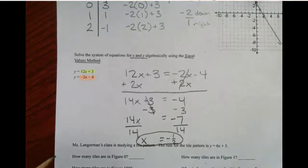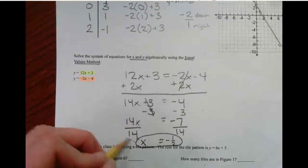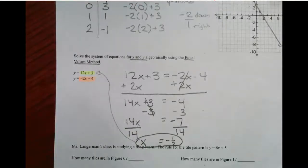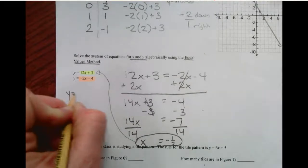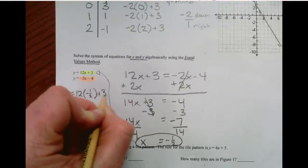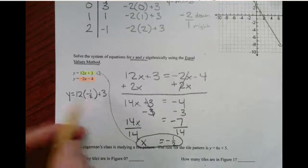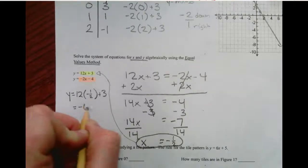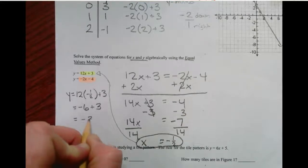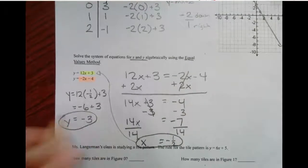I still need to know what y is, though. So I'm going to plug it into one of these. Let's see, I'm going to plug it into that one. So y is equal to 12 times negative 1 half plus 3. 12 times the negative 1 half is negative 6 plus 3. So this is negative 3. And that's y.